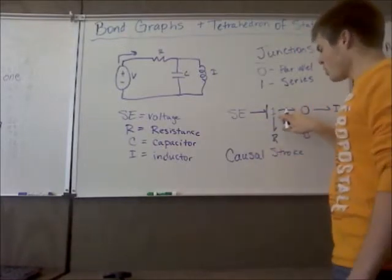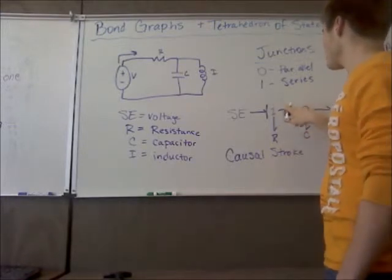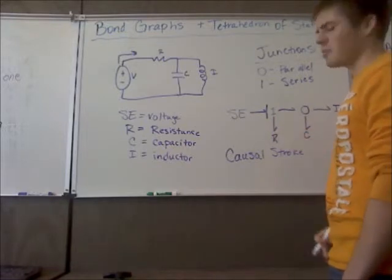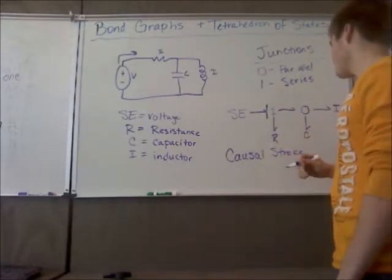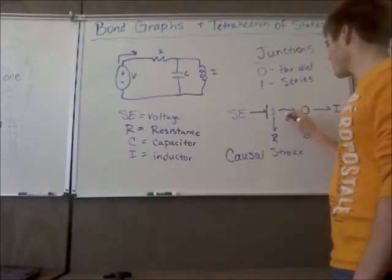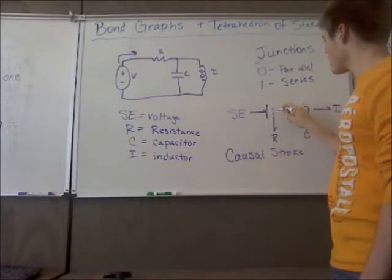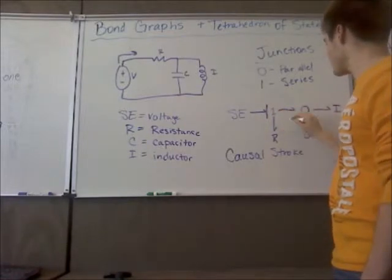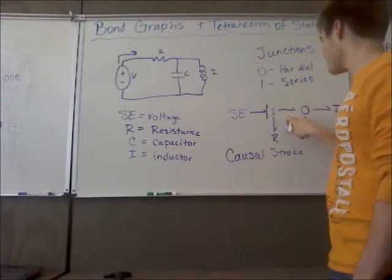So the one junction will always have two causal strokes touching it, and then one being on the outer, like, away from it. So there's either going to be, you can assign one of these on the inside, and then the other one's going to have to be on the outside. And I'll explain how to figure that out in a second here.